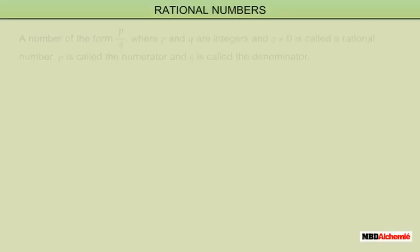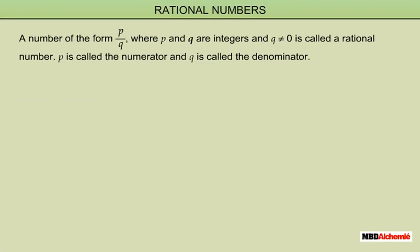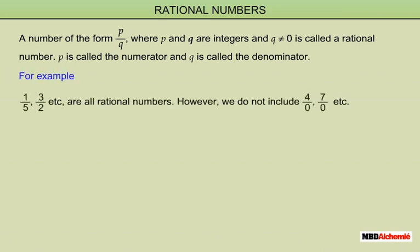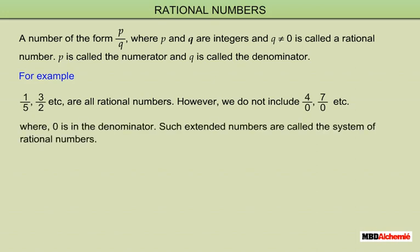Rational Numbers: a number of the form p upon q, where p and q are integers and q is not equal to 0, is called a rational number. p is called the numerator and q is called the denominator. For example, 1 upon 5, 3 upon 2, etc. are all rational numbers. However, we do not include numbers like 4 upon 0 or 7 upon 0, where 0 is the denominator.